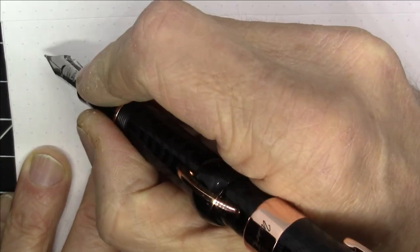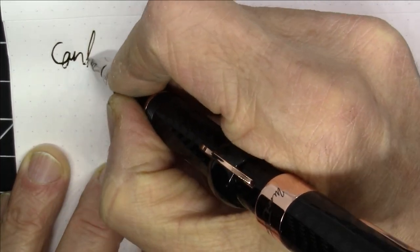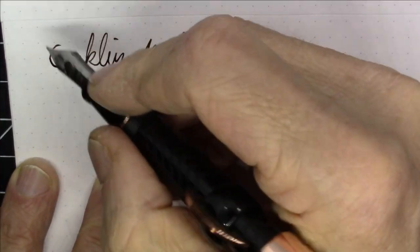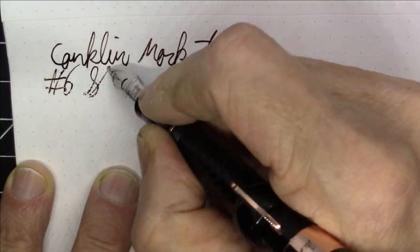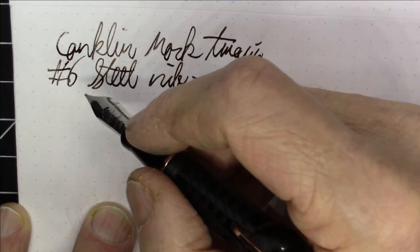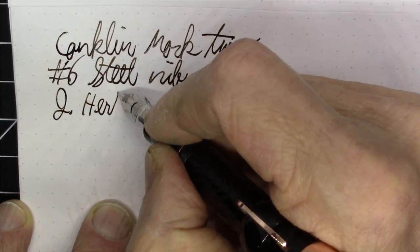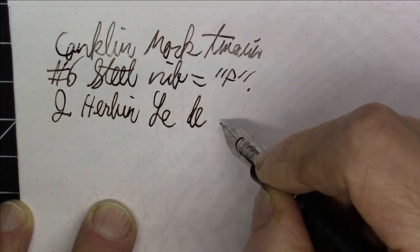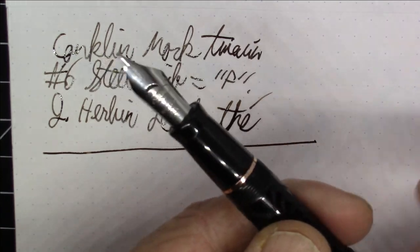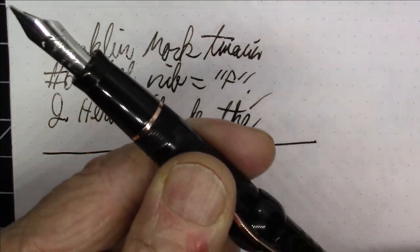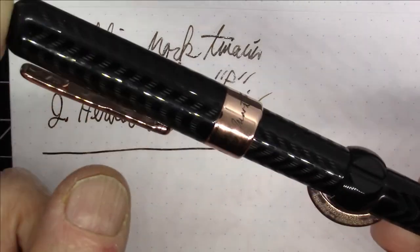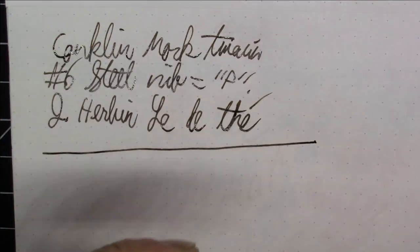This is a Conklin Mark Twain. This pen has a number six steel nib in fine, and this ink is J Herbin Le Dete. Really nice pen. Big nib, writes well. The nib's got that crescent shaped breather hole, which I really like. And it's got a cool filling mechanism. Really nice pen made to look like an old black chased hard rubber pen, but this pen is acrylic.